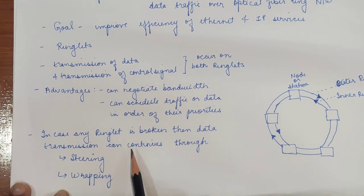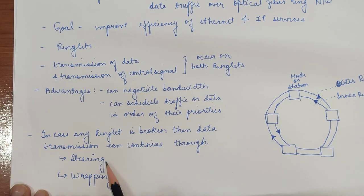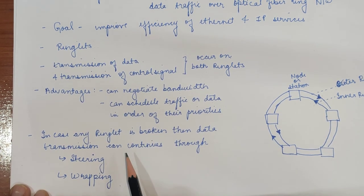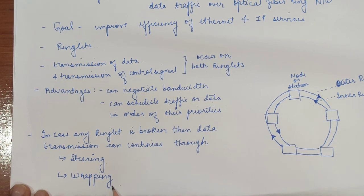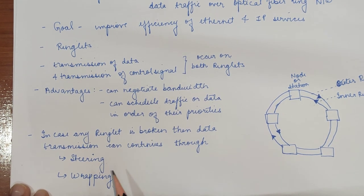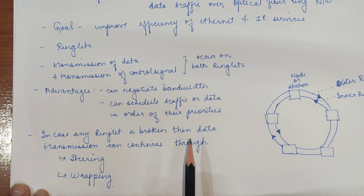In case any ring is broken, transmission can still continue using two methods: steering and wrapping. In steering, all nodes are notified about the broken link and they reroute the traffic. In wrapping, the data traffic is looped back at the last node before the link breakage and rerouted to the destination via the other ringlet.